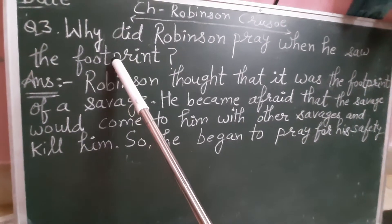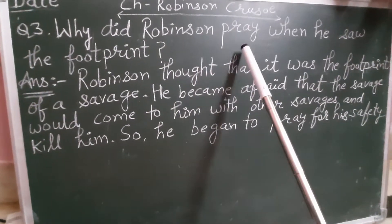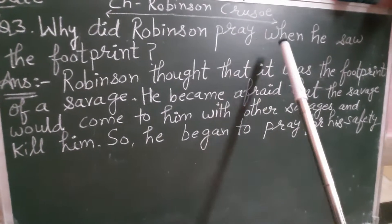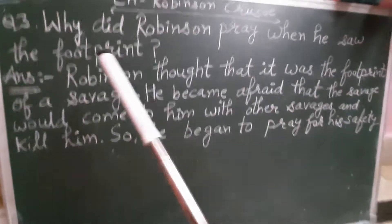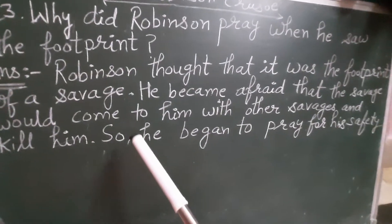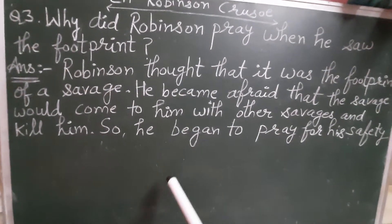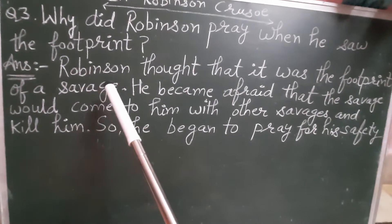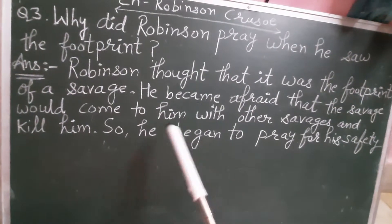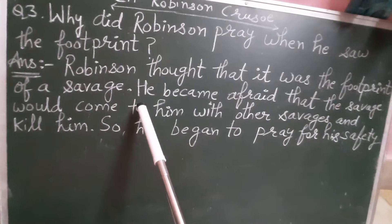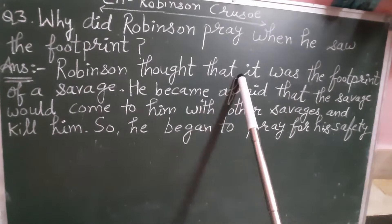Question number three: why did Robinson pray when he saw the footprint? Jo Robinson hai usne pray karna kyon shuru kar diya jab usne un footprints ko dekha? Kyunki woh dara gaya tha aur isliye Bhagwan se pray karna shuru kar diya — God mein believe kiya, sochta hai ki Bhagwan unhe bacha lenge. Usne laga tha ki koi savage hai woh, aur woh jaakar doosre savages ko bhi lekar aayega aur use maar dega.